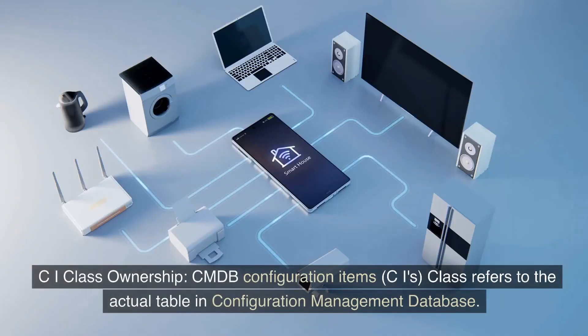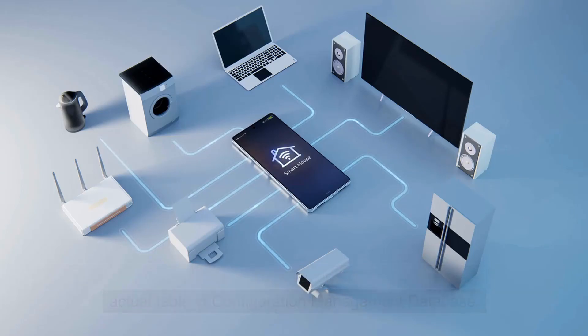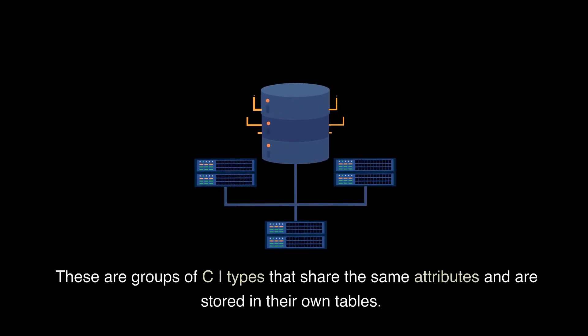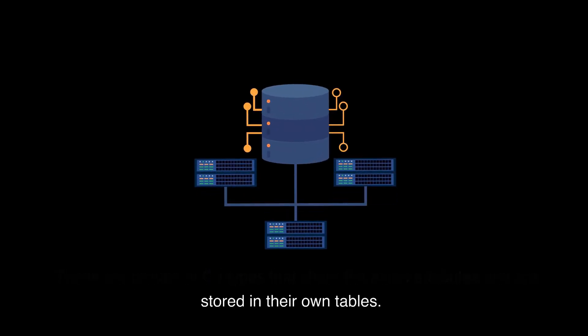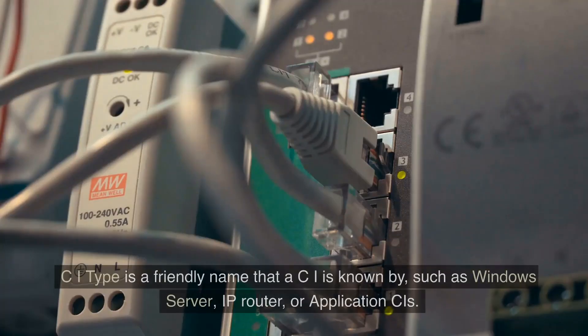CI class ownership. CMDB Configuration Items CIs Class refers to the actual table in Configuration Management Database. These are groups of CI types that share the same attributes and are stored in their own tables.